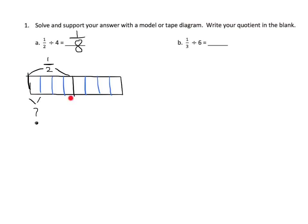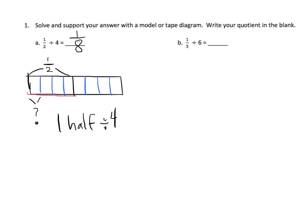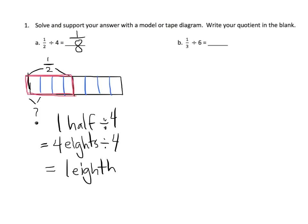How do we know? Because the whole is cut up into eight equal-sized pieces, and when you take a half and cut it up into four, you get one of these little pieces — that's one-eighth. Another way to think of this is in unit form: one-half divided by four. One-half can also be thought of as four-eighths. So four-eighths divided by four — four divided by four — is one-eighth. So the answer is one-eighth.